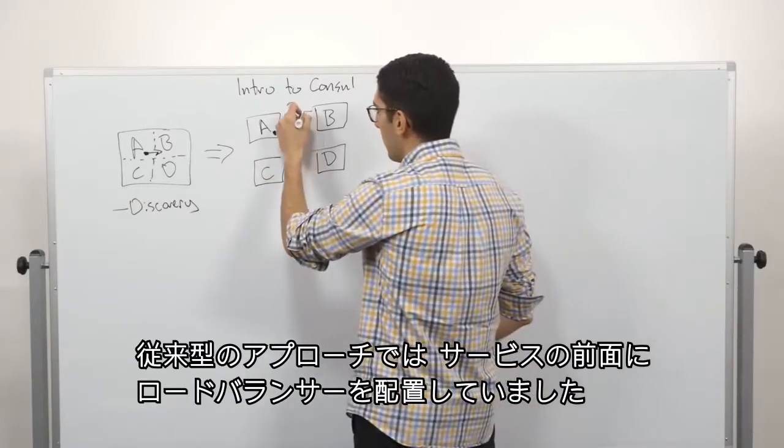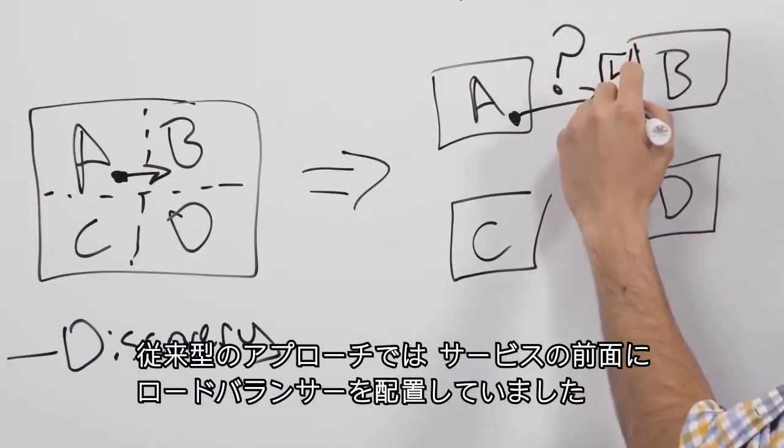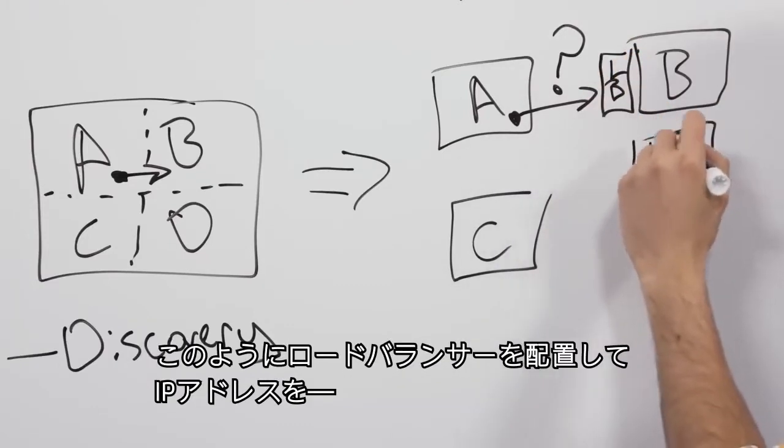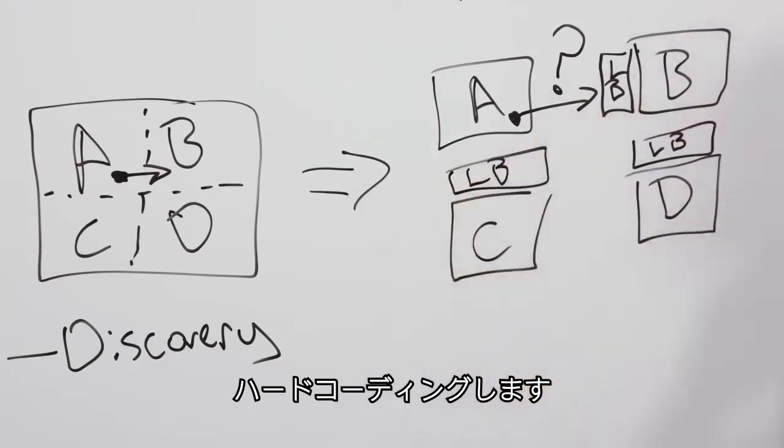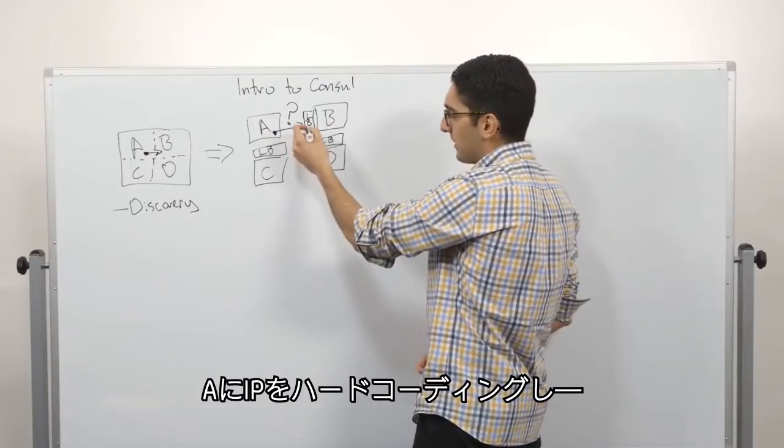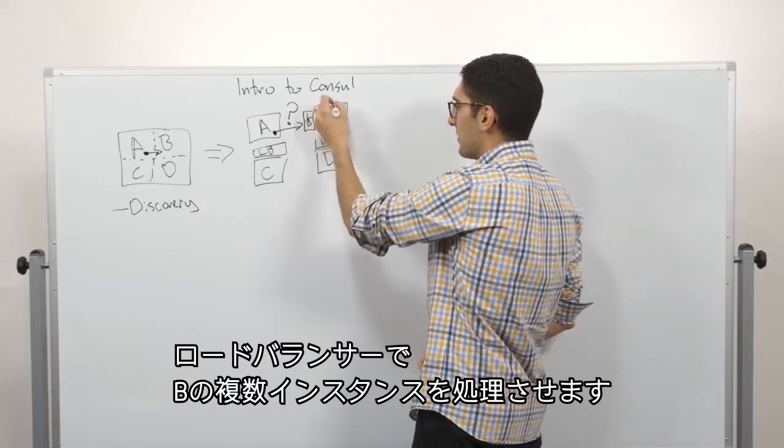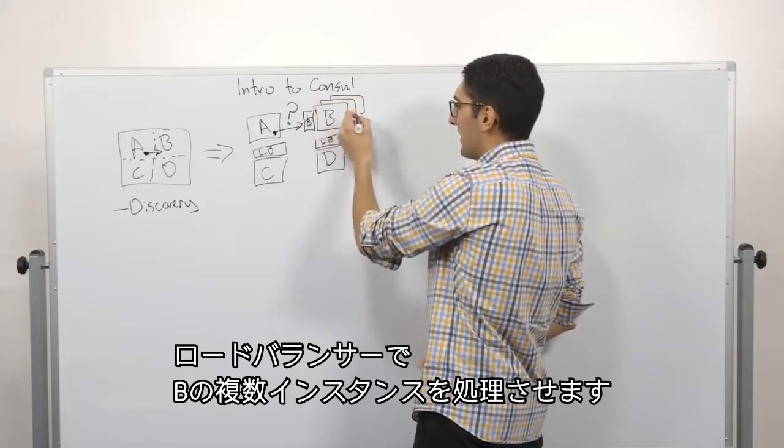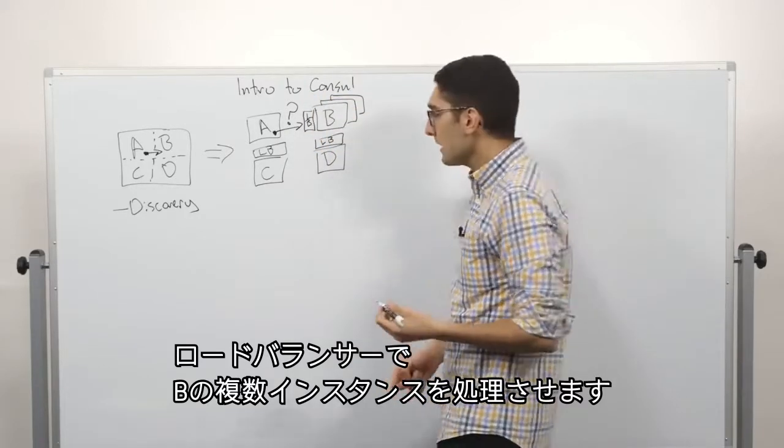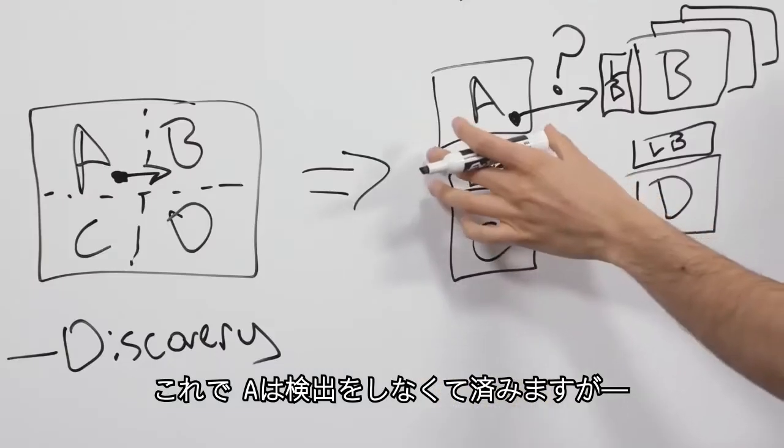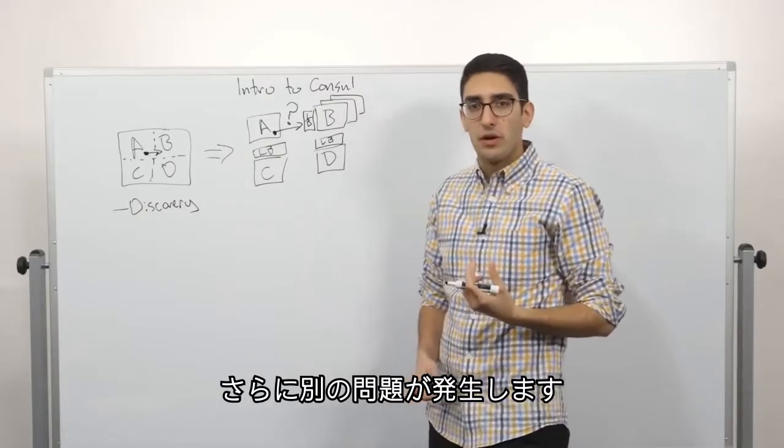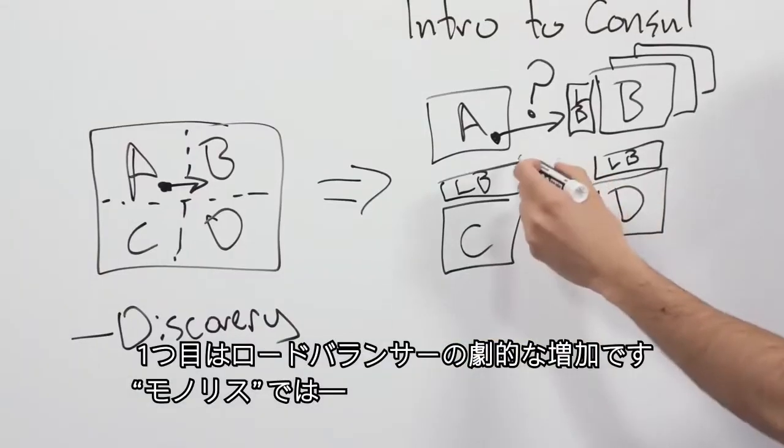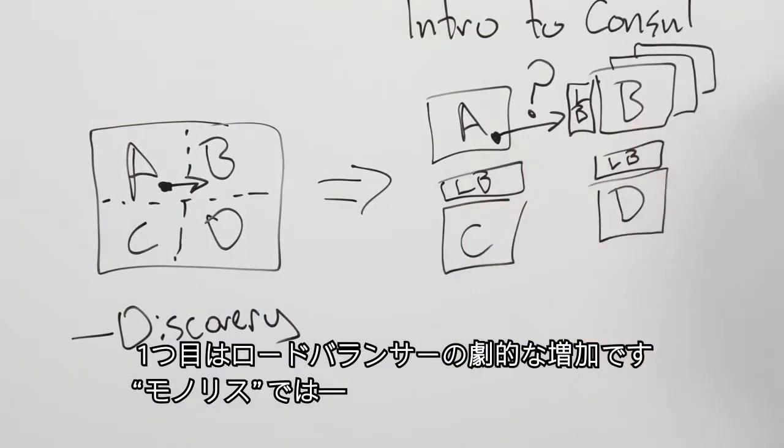There's a few approaches to this. Historically, what we would have done is probably front every one of these services with a load balancer. So we put a load balancer in front of every service tier. And then we hard code the IP address of the load balancer. So A hard codes the IP of the load balancer. And then the load balancer deals with the fact that there might be multiple instances of B. So this allows A to skip discovery by hard coding this address.